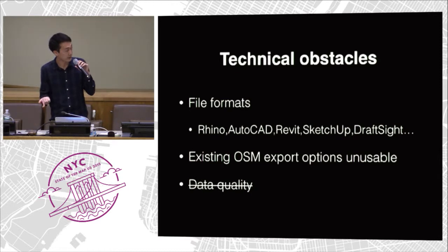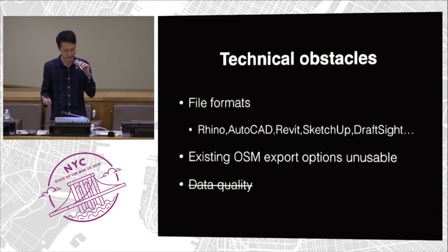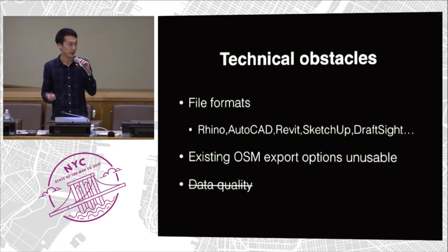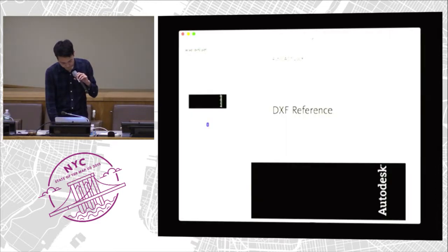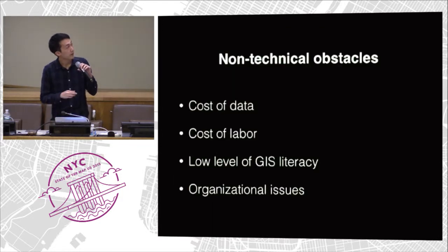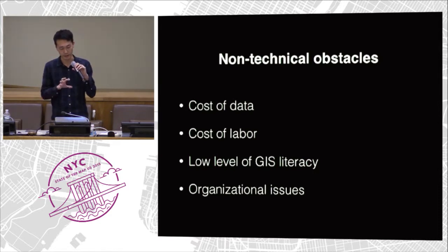The file formats are one technical issue. The existing OSM export options aren't super great right now. And you would think data quality would be an issue, but what I've slowly discovered is that the data available from OSM is significantly better than what people generally have access to, both in terms of accuracy and completeness — especially in places like the developing world where there might be a lot of students working on projects in other countries. I think OSM is the best data available.